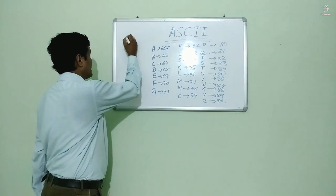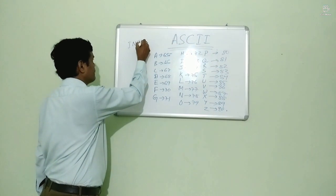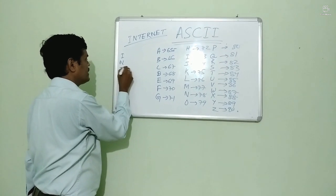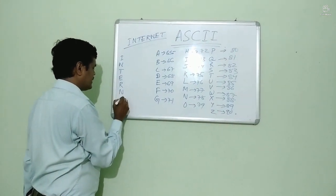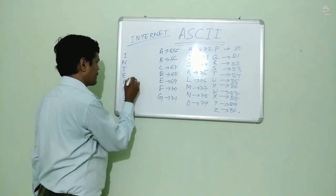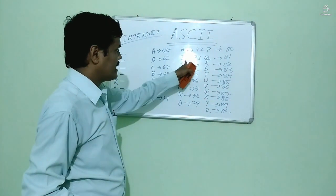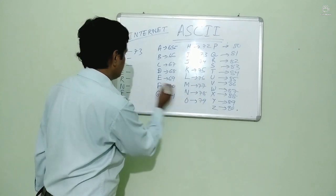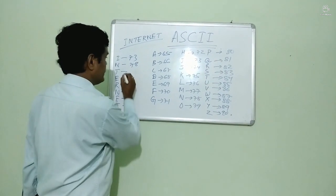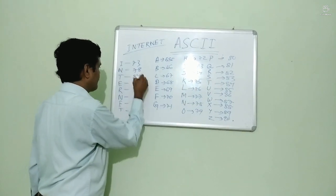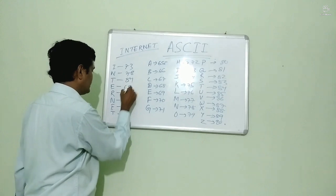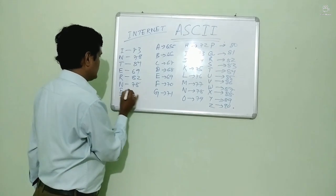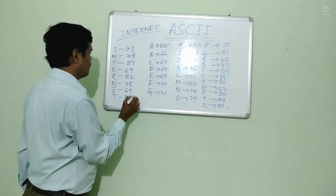If we want to write 'INTERNET' — I, N, T, E, R, N, E, T — then the I code is 73, N code is 78, T is 84, E is 69, R is 82, N is 78, E is 69, and T is 84.